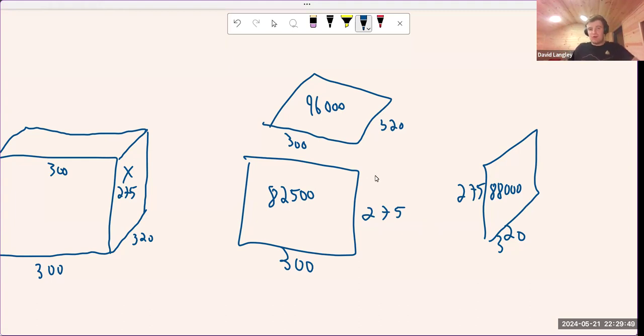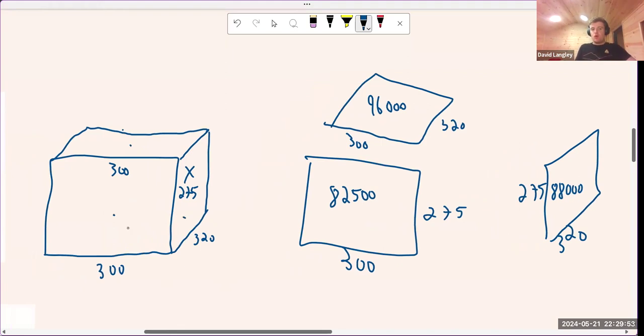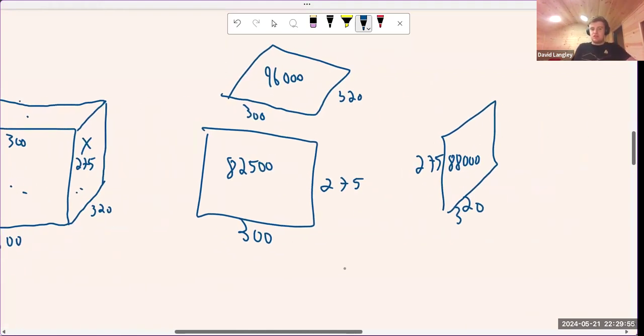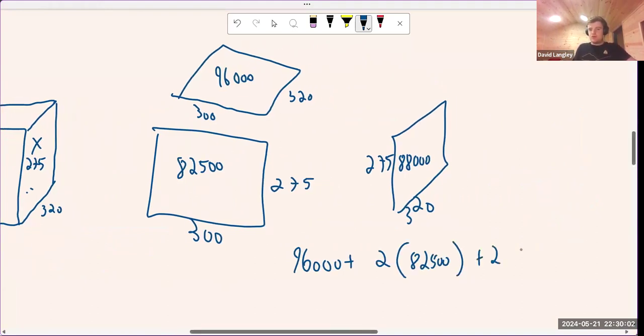Well, there's only one ceiling. That's fine. There's one at the top, but there's four walls, two of each. And so it's going to be 96,000 plus two times 82,500 plus two times 88,000.